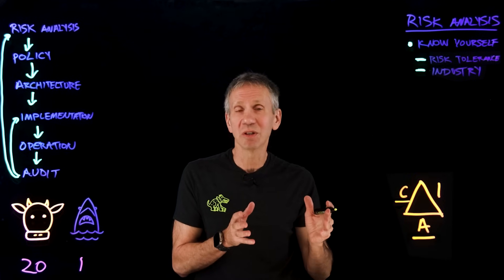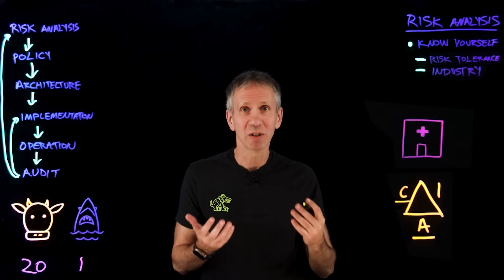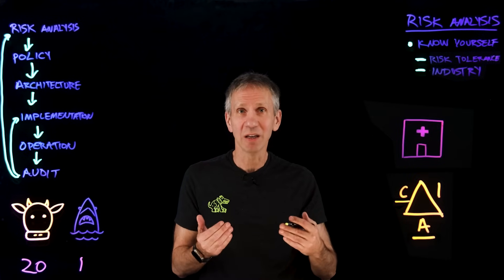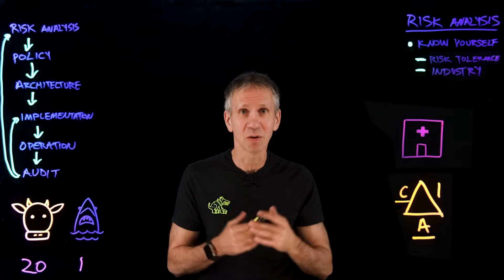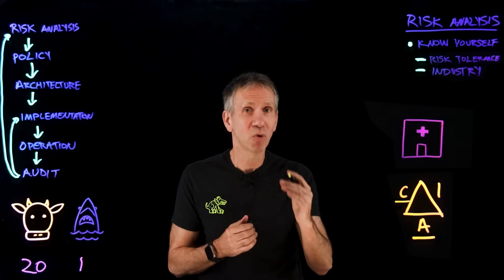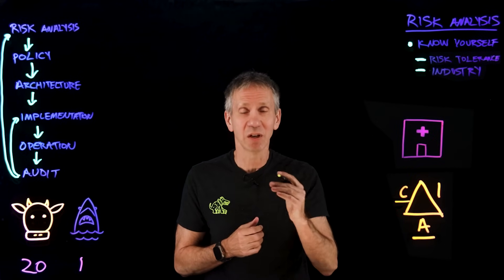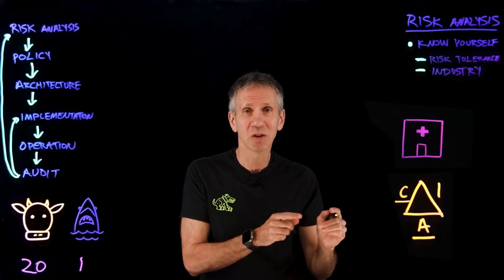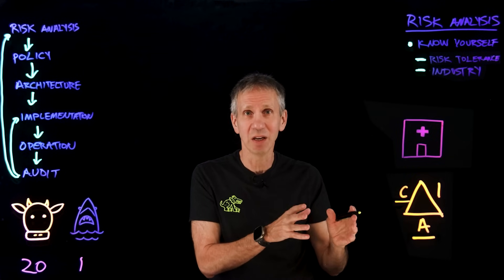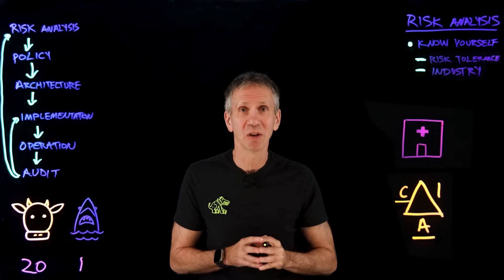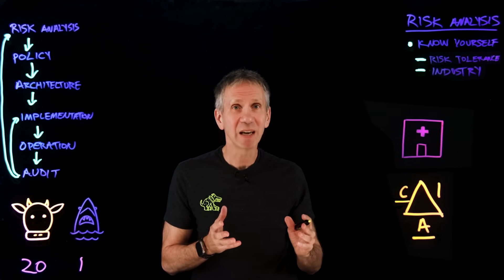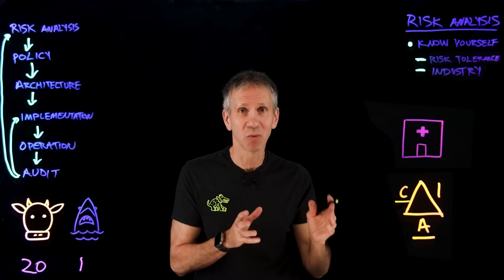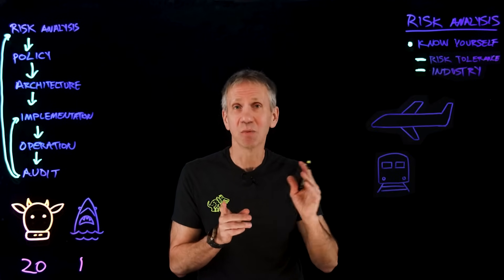Healthcare is another industry where the number one concern is patient safety. They're going to be concerned about confidentiality — there are laws that protect your personal information — but they're predominantly concerned with your safety if you're a patient. So they're going to be very risk averse on aspects involving patient safety, maybe not as risk averse in some other areas. You can line up three banks and they may have different tolerances for risk — one is a train, one's a plane, and one's a parachute.